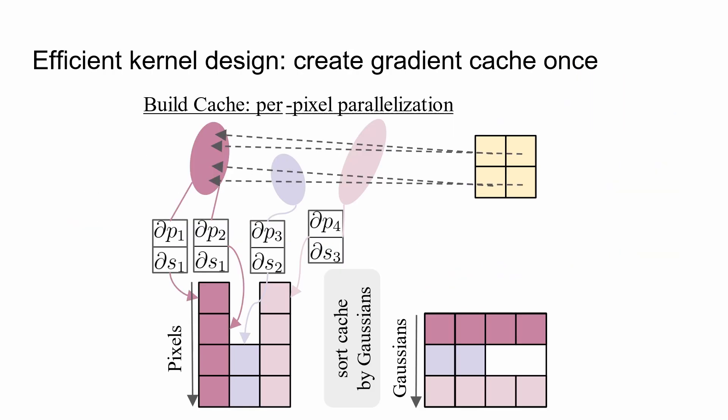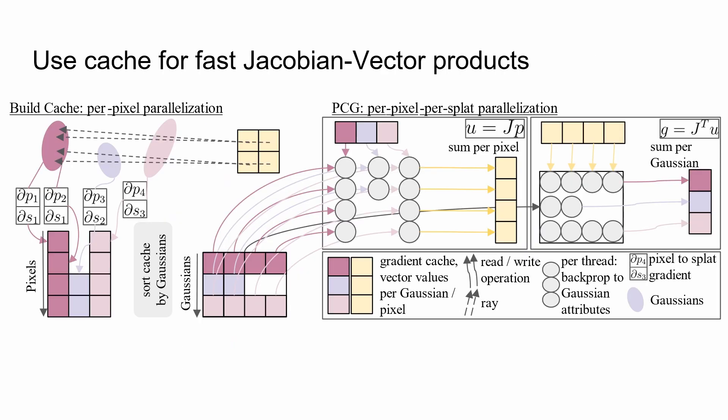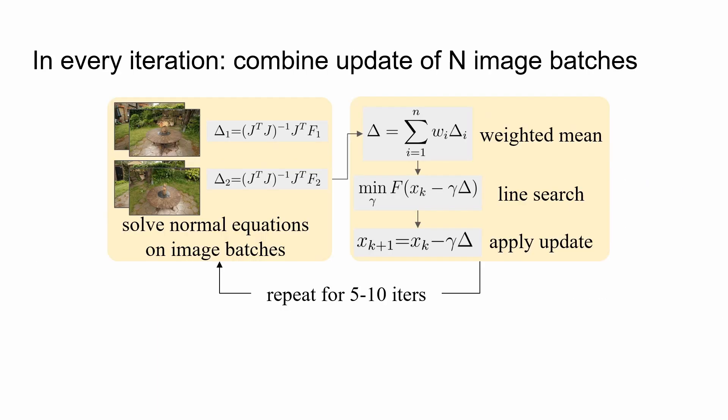First, we cache the alpha blending gradients of all Gaussian Splats along every ray. Then we compute the required Jacobian vector products. The cache allows us to efficiently parallelize the computation over all Splats and rays. We combine update vectors of multiple batches in every iteration, which reduces the GPU memory because we only store the cache for one batch at a time.